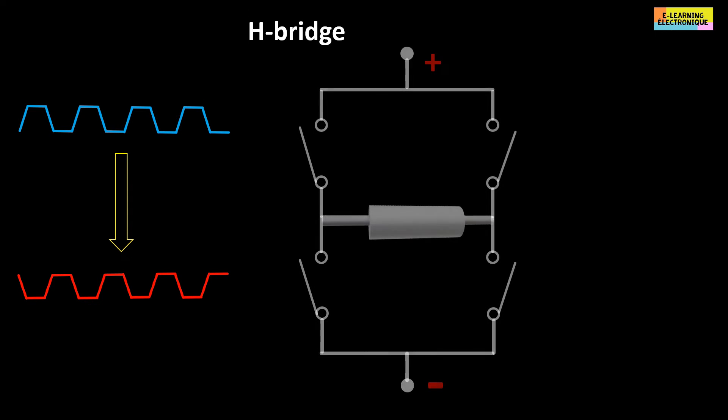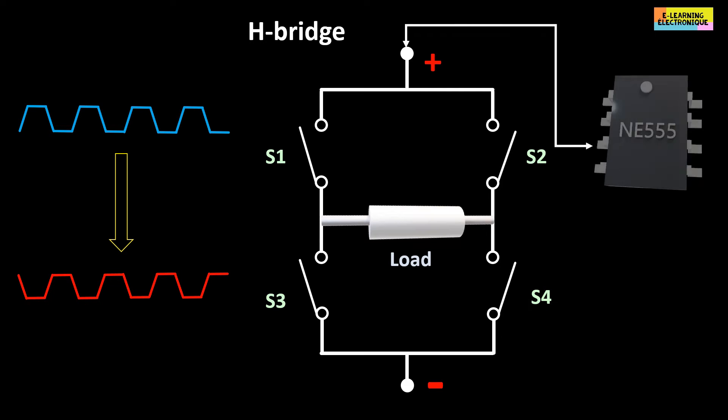Now how do we reverse the polarity of a signal? Here, we will use an electronic circuit called an H-bridge. The circuit is composed of four switches. The load to be supplied with current is in the middle, hence the appearance of the letter H. The circuit is connected to a current source and to a control device for opening and closing the switches.